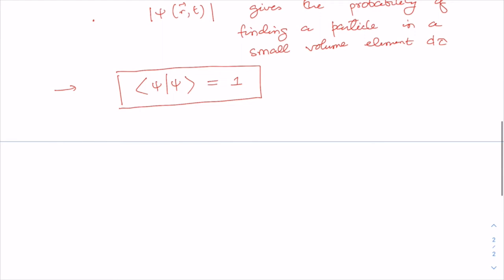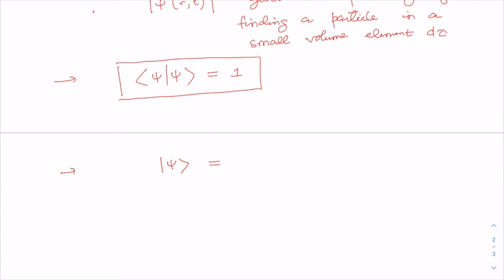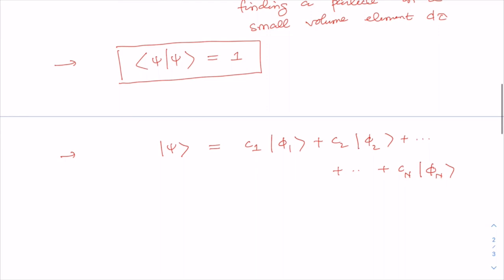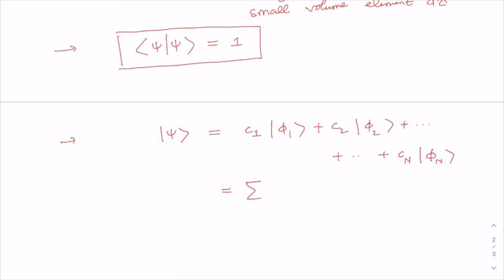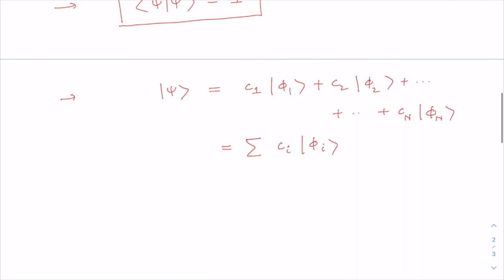Before making a measurement, a quantum system can be considered to be in any arbitrary state |ψ⟩. This state can be expressed as a superposition of eigenstates accessible to the system. We can write any arbitrary ket as a superposition: |ψ⟩ = c₁|φ₁⟩ + c₂|φ₂⟩ + ... + cₙ|φₙ⟩, which in shorthand notation is Σᵢ cᵢ|φᵢ⟩. Here the |φᵢ⟩ are called eigenvectors, basis states, or basis vectors.